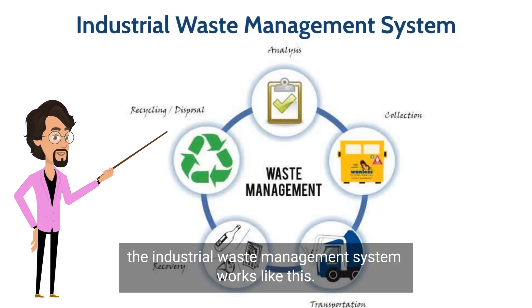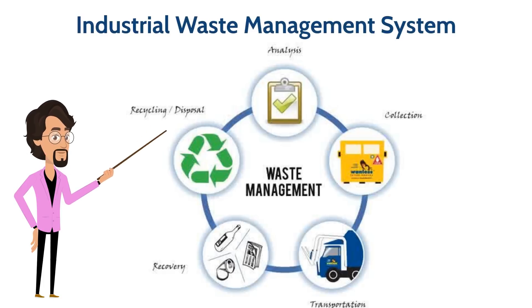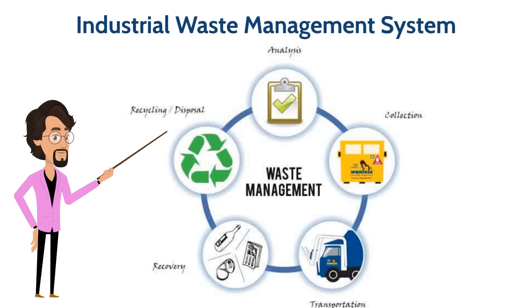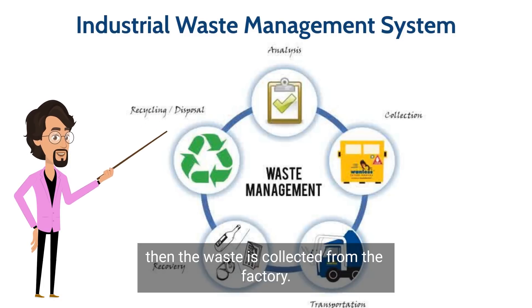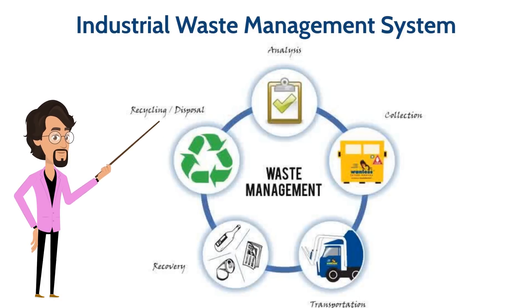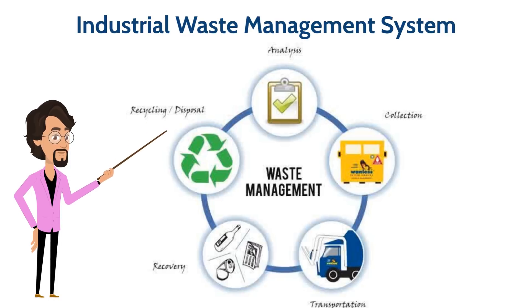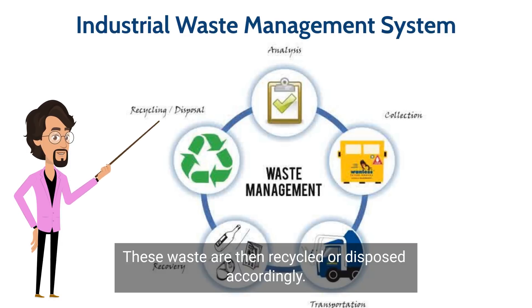The industrial waste management system works like this: First, the waste is analyzed and segregated. Then the waste is collected from the factory. This waste is then transported to the waste processor. These wastes are then recycled or disposed of accordingly.